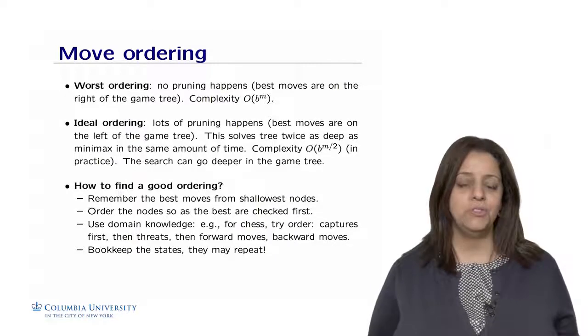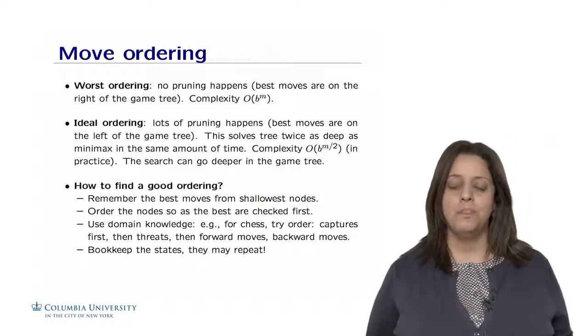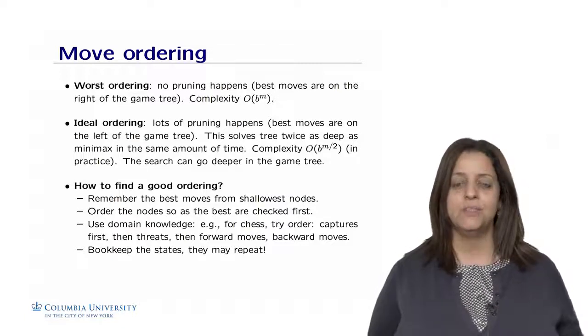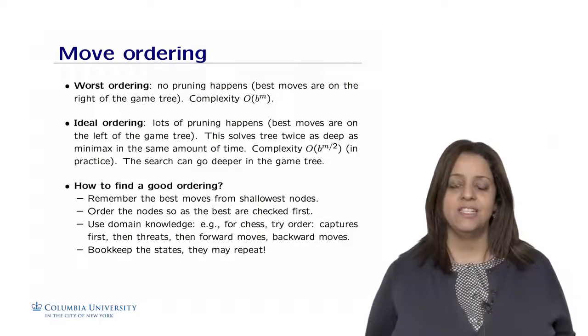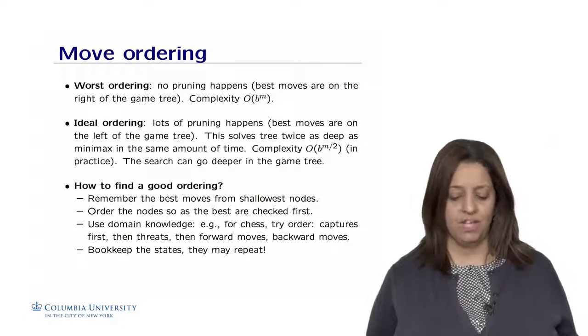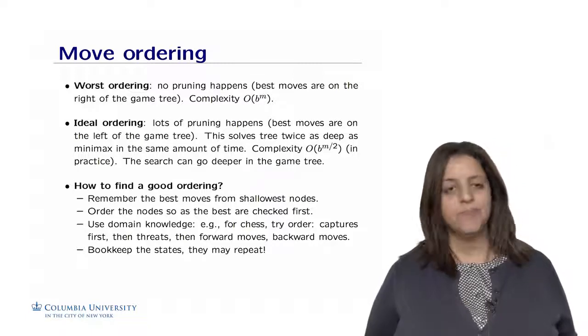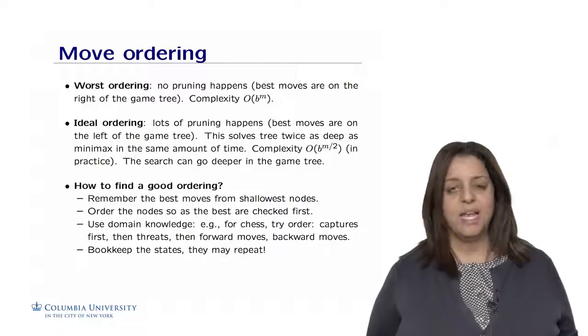So the question is how to find a good ordering. There are different strategies to do that. So first of all, we can remember the best moves from the shallowest nodes. So it means that the actions can be just reproduced based on what we have observed in the shallowest nodes. We can order the nodes as the best are checked first.